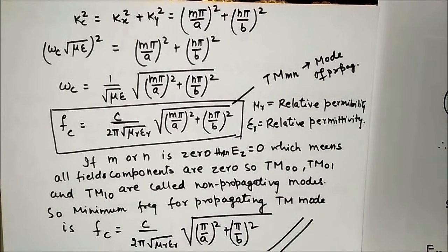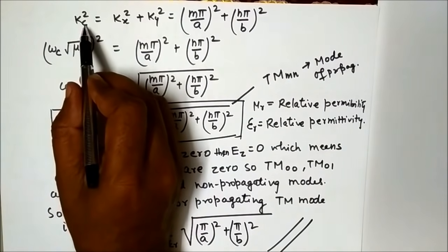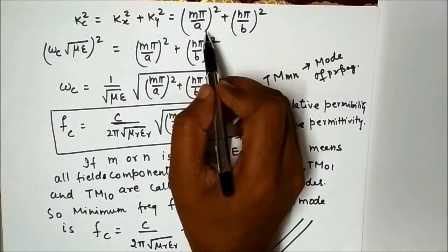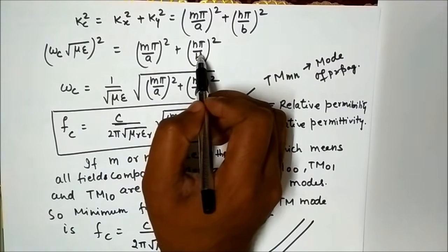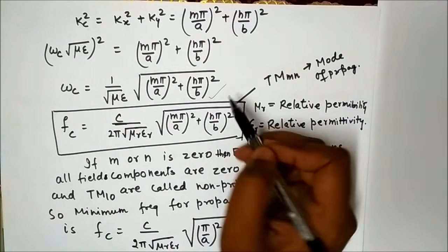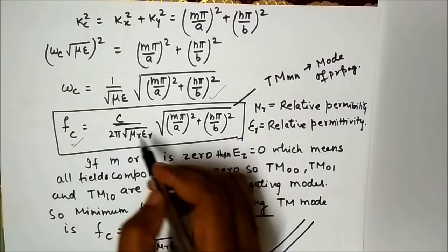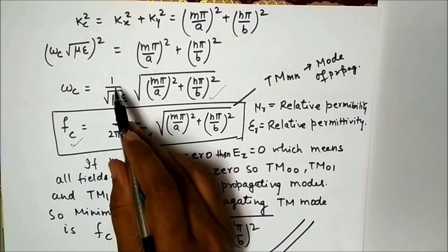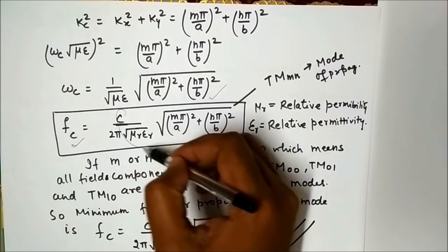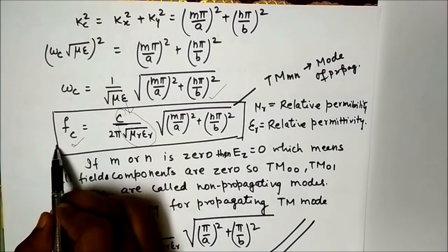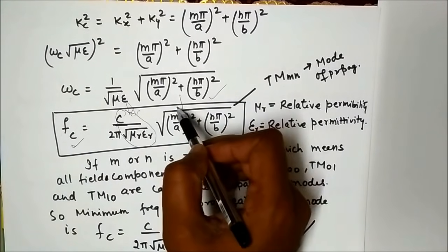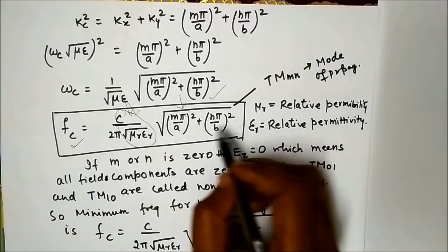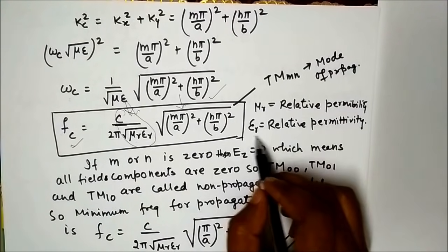For cutoff frequency: Kc is the cutoff wave number, where (ω_c·√(με))² = Kc². So ω_c = Kc/√(με), giving cutoff frequency fc = (1/(2π)) · (1/√(μ_r·ε_r)) · √[(mπ/a)² + (nπ/b)²], where μ_r and ε_r are relative permeability and relative permittivity.